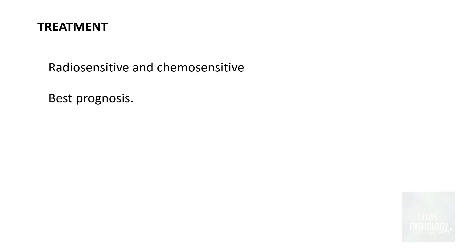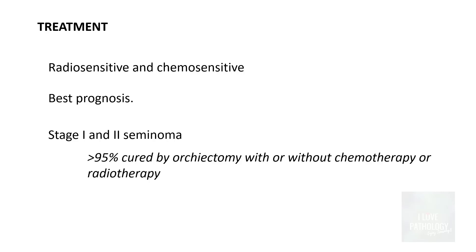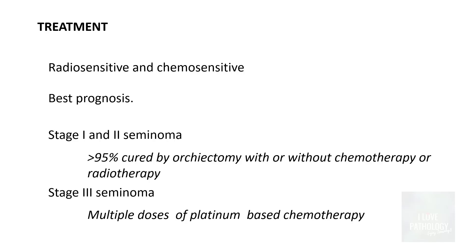Seminomas are the most radiosensitive and chemosensitive of all germ cell tumors, which is why they have the best prognosis. Stage 1 and stage 2 seminomas have a 95% cure rate with orchiectomy, with or without chemotherapy or radiotherapy. Stage 3 seminomas are subjected to multiple doses of platinum-based chemotherapy, but even then the survival rate is better than other germ cell tumors or mixed germ cell tumors.